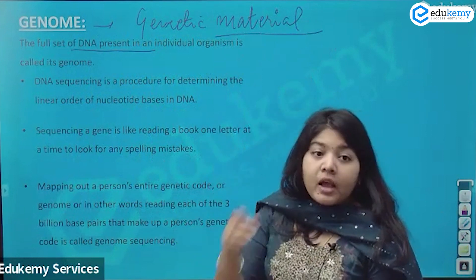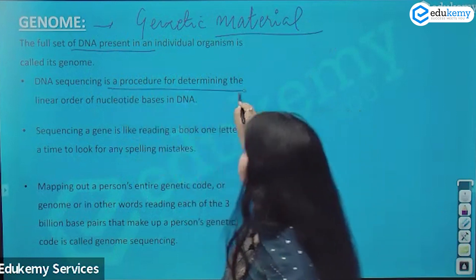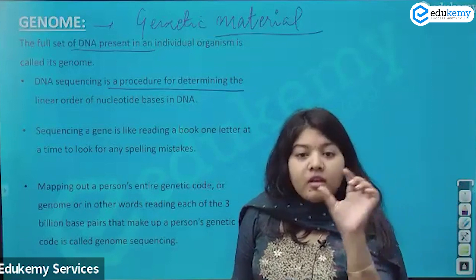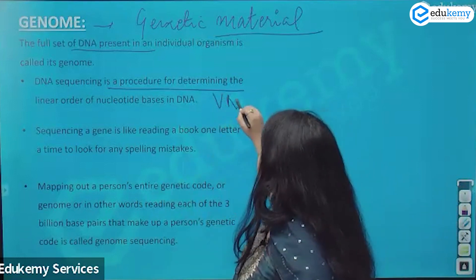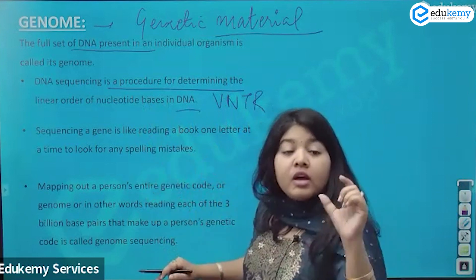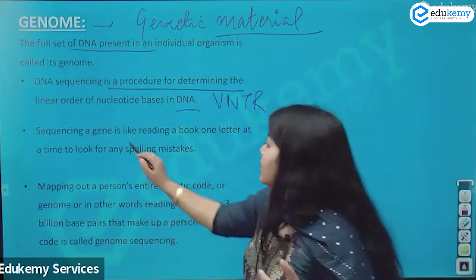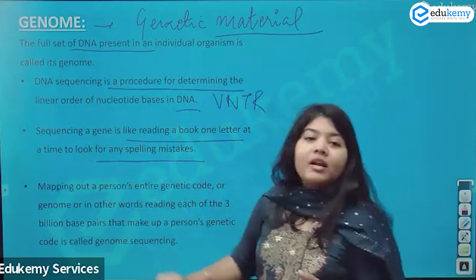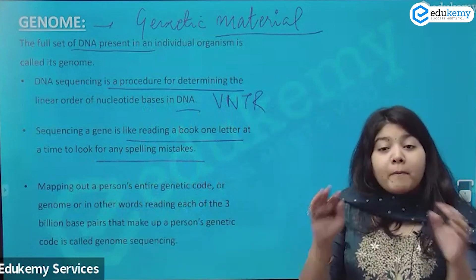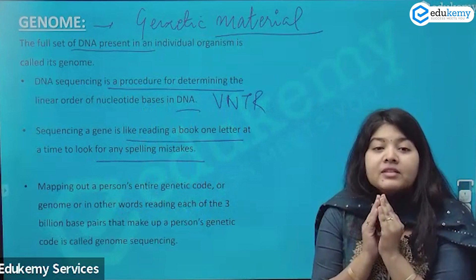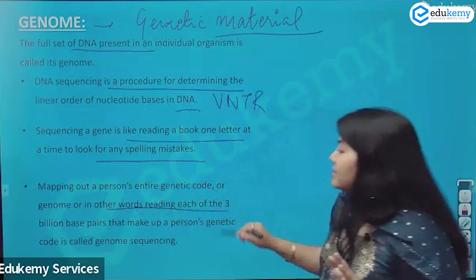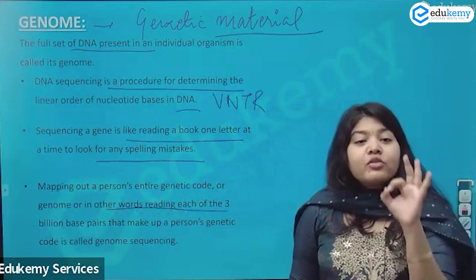DNA sequencing is a procedure for determining the linear order of nucleotide bases. Sequencing a gene is like reading a book one letter, one word at a time. Mapping out a person's entire genome code is like reading each of the three billion base pairs.